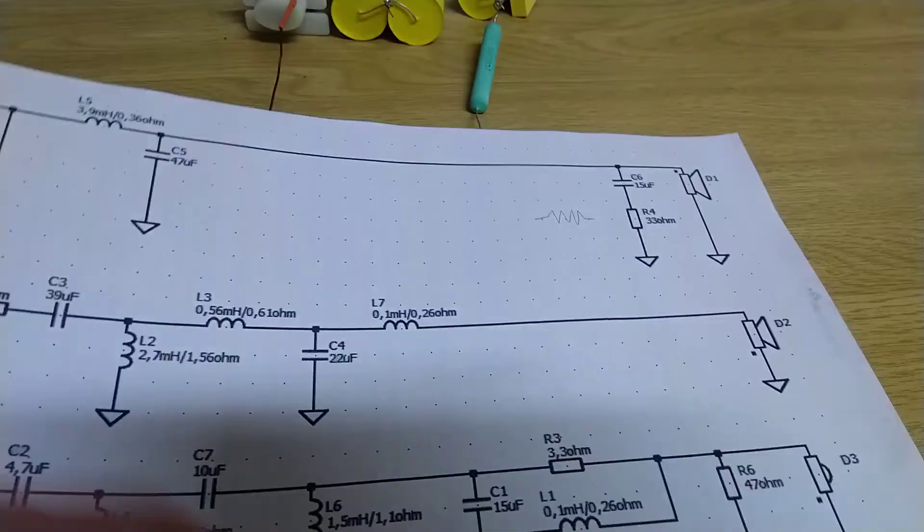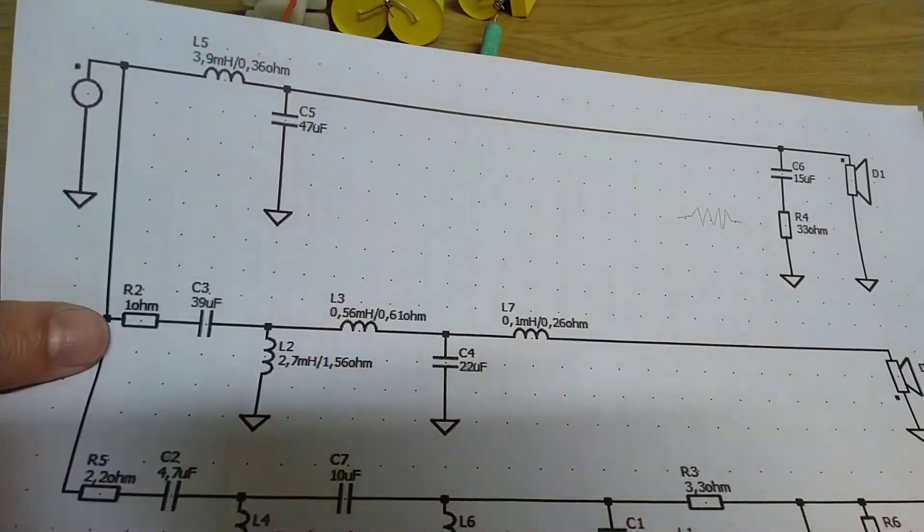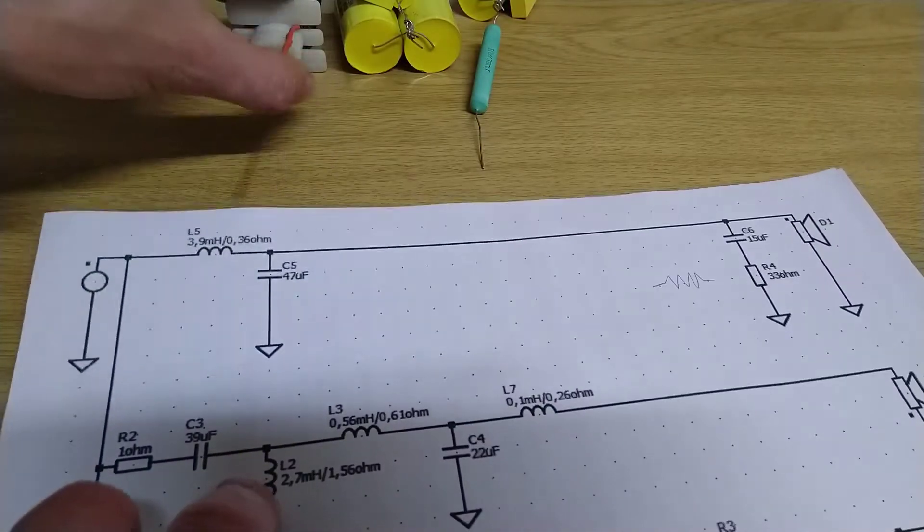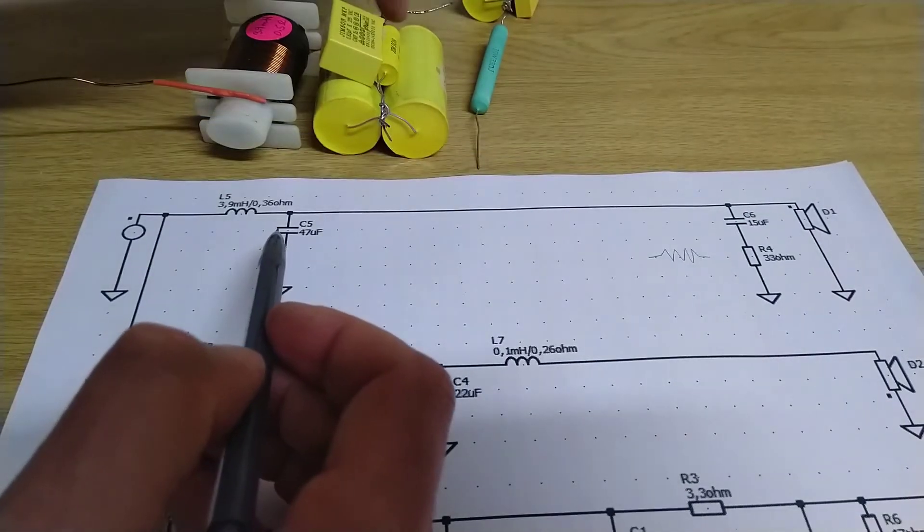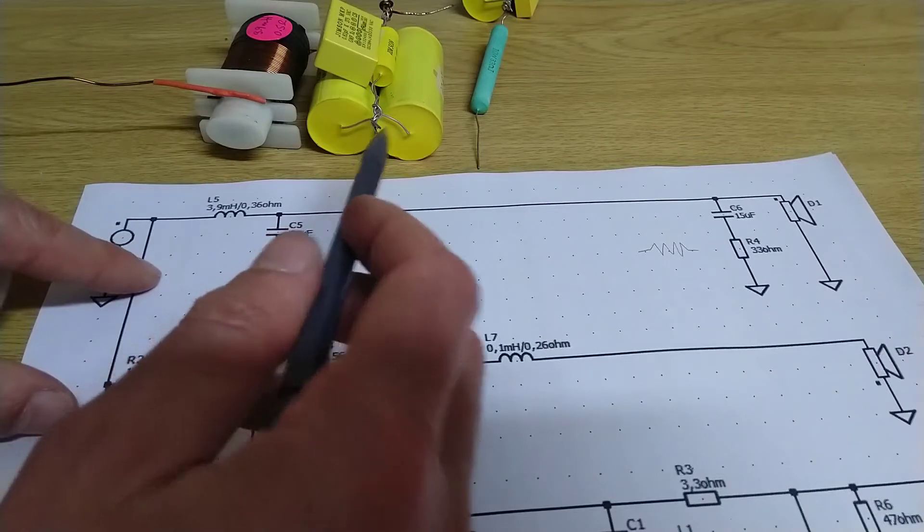You can ignore everything from here down. Positive in. First inductor, the 3.9. So this would be power in here. Start here, comes to this capacitor, which then goes to ground on this side.